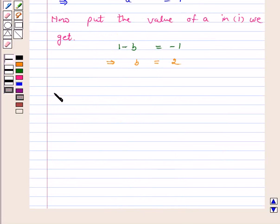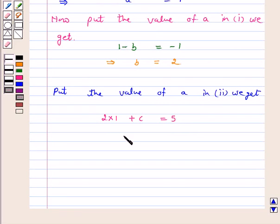Now, put the value of A in equation 2. We get 2 into 1 plus C is equal to 5, which implies C is equal to 3.